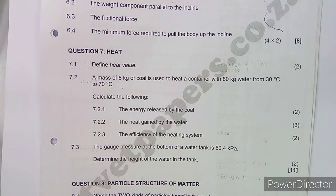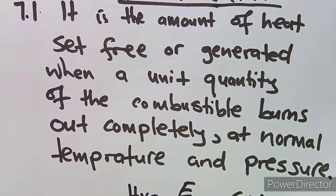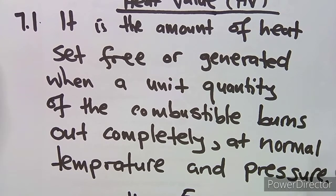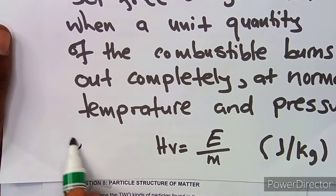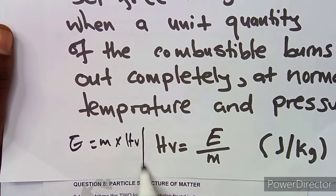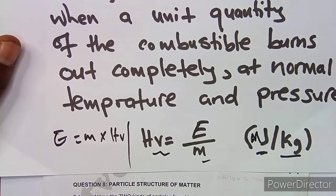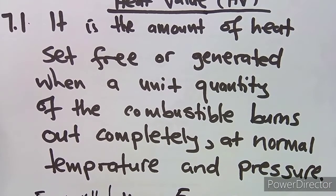The first question on Question 7 is to define heat value — that's worth two marks. The heat value is the amount of heat set free or generated when a unit quantity of the combustible burns out completely at normal temperature and pressure. The formula is: energy E equals mass times heat value, where heat value is given in joules per kg, normally mega joules per kg.